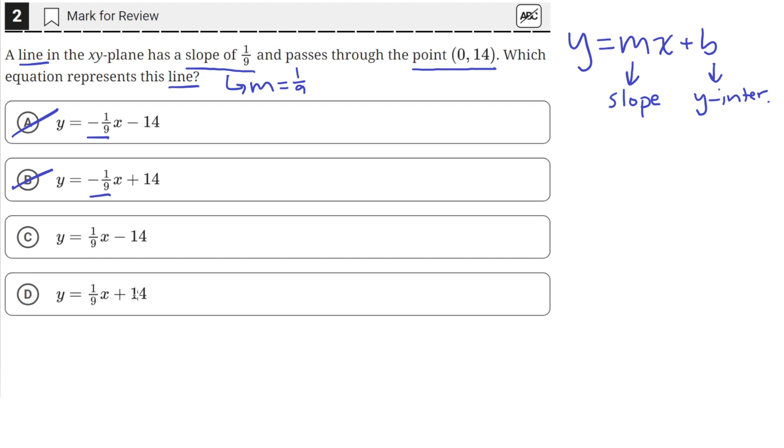We have to choose between C or D. The problem statement also tells us that it passes through the point (0, 14). Now (0, 14) has an x-coordinate of 0, which means that this point lies on the y-axis.